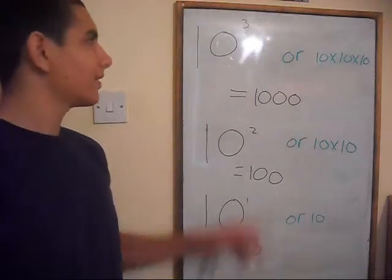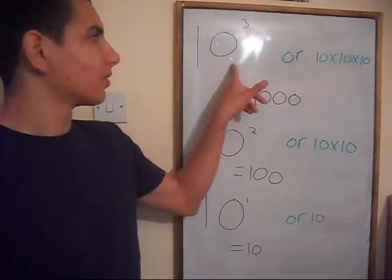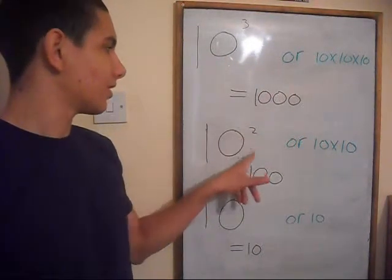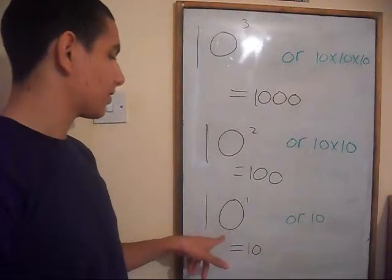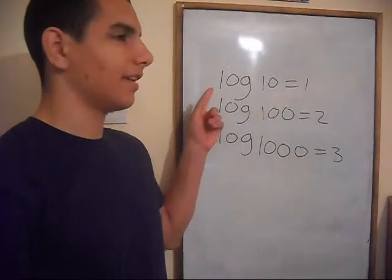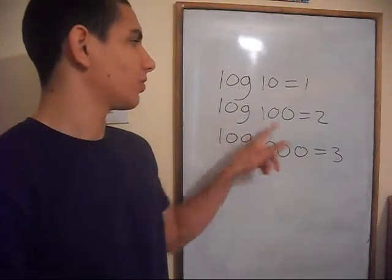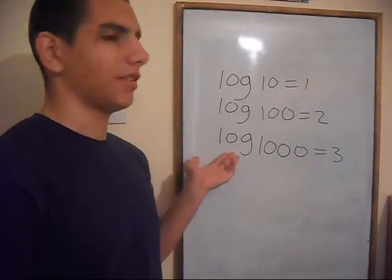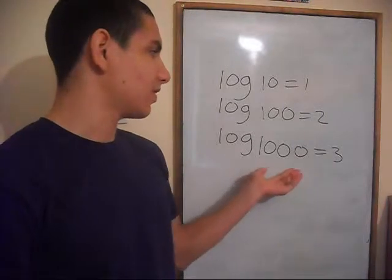Well we know that 10 to the power of 3 equals 1000, and 10 to the power of 2 equals 100, and 10 to the power of 1 equals 10. Earlier I said that log 10 equals 1 and log 100 equals 2. Well there's an obvious pattern. Log 1000 equals 3.